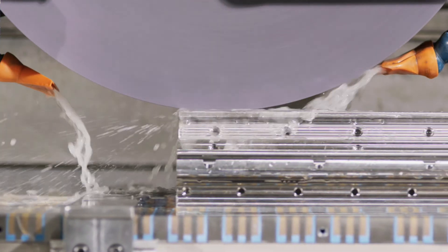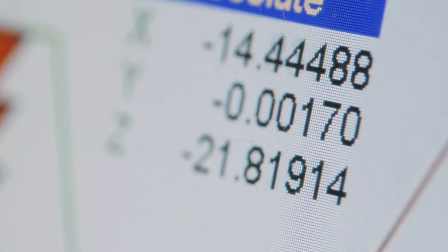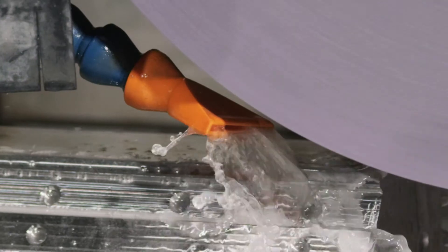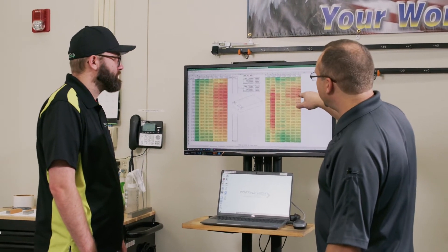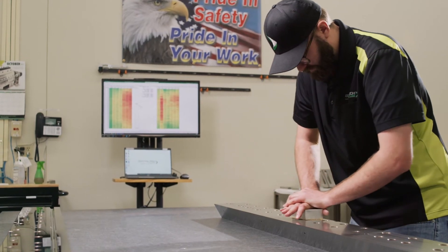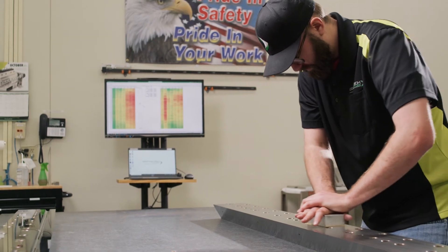So we'll grind the surfaces to get our dies precisely flat. Once the die is ground flat we take it off and we'll inspect that surface, and any high areas we'll hand lap down so that we get a precise plane.